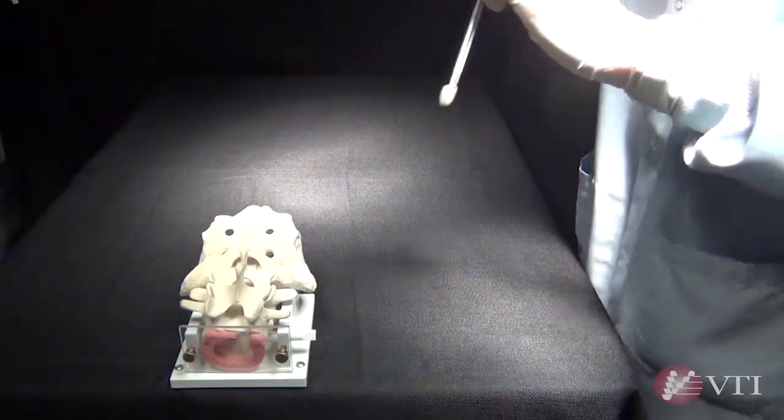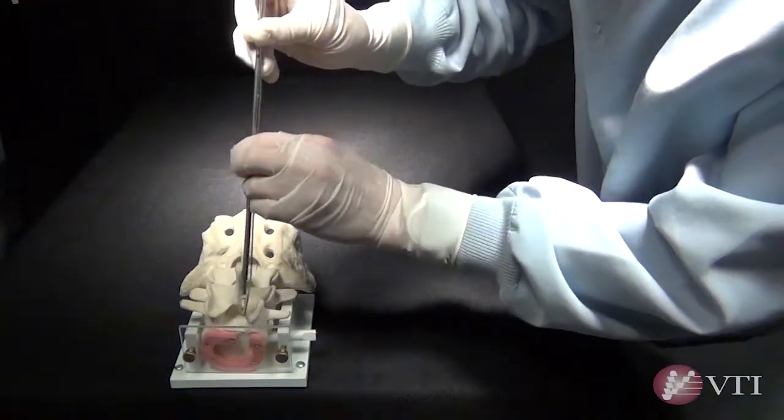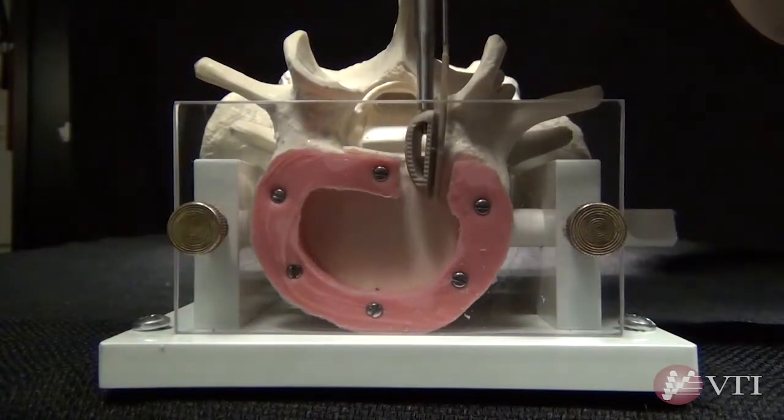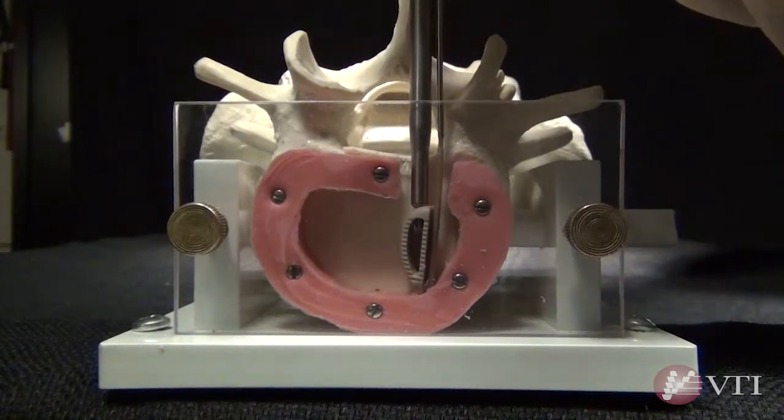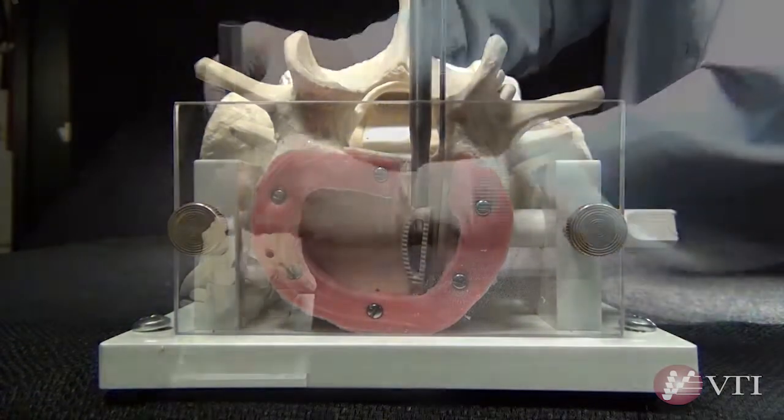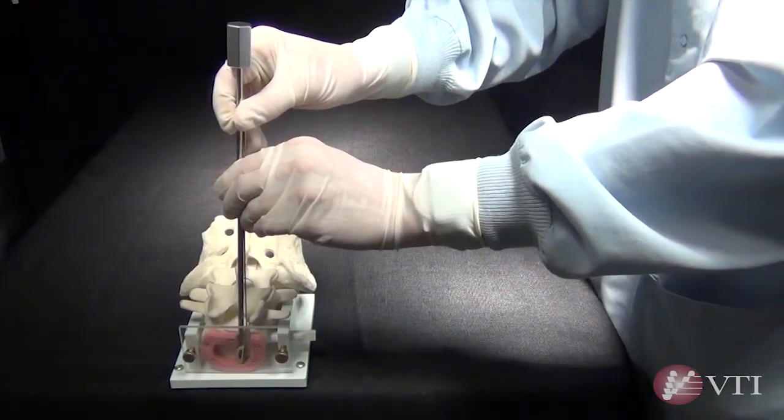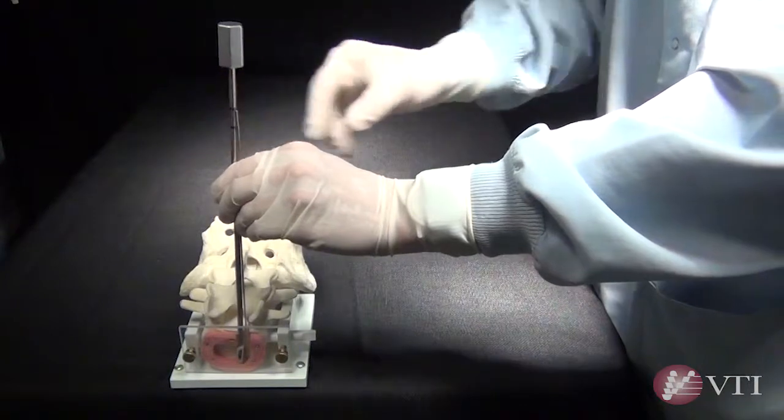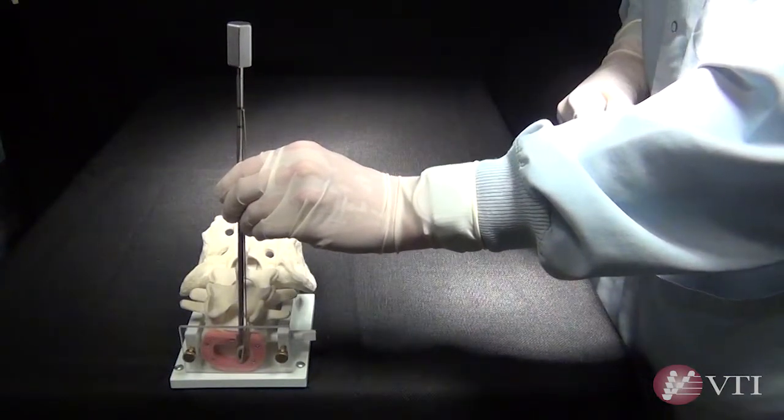The A segment is inserted into the disc space such that the serrated edges contact the vertebral end plates and the curved portion of the segment is oriented toward the contralateral side of the disc space. Once inserted, the tail of the segment and the threaded inserter will be protruding from the disc space.